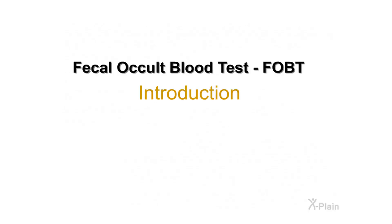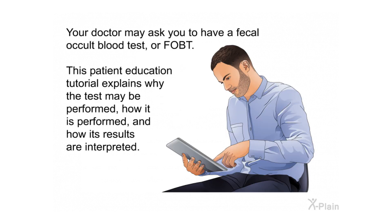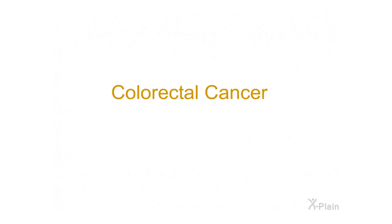Fecal Occult Blood Test (FOBT) — Introduction. A fecal occult blood test is used to screen patients for colorectal cancer. The test helps detect the presence of hidden blood in the stool, which is one of the first warning signs that a patient may have colorectal cancer. Your doctor may ask you to have a fecal occult blood test or FOBT. This tutorial explains why the test may be performed, how it is performed, and how its results are interpreted.